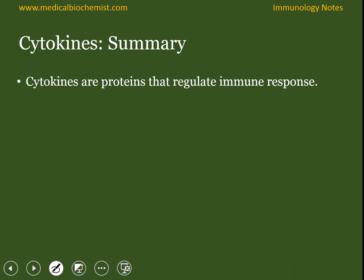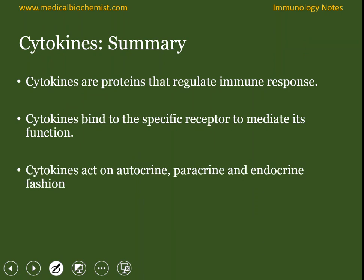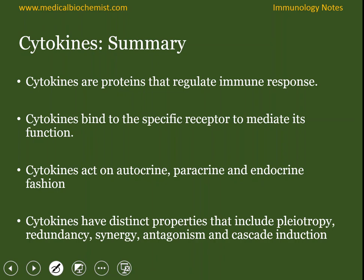In summary, today we discussed cytokines and how they regulate the immune response. We discussed receptors and how cytokines bind to specific receptors in an autocrine, paracrine, and endocrine fashion. We also discussed the distinct properties of cytokines that include pleiotropy, redundancy, synergy, antagonism, and cascade induction.